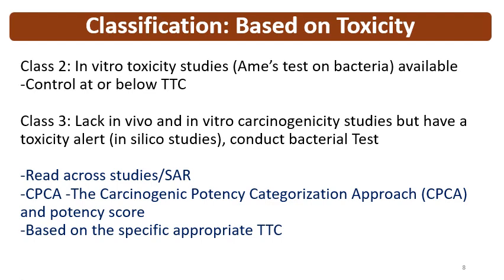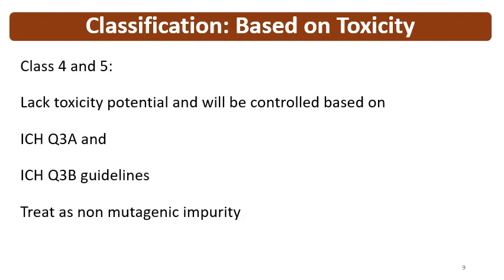The Carcinogenic Potency Categorization Approach (CPCA) is provided by regulatory authorities based on structure. Based on the presence of alpha carbon, beta carbon, and other structural characteristics, a CPCA potency score is assigned, and from that score the limits are derived. Additionally, based on a specific appropriate TTC, limits can be given for these impurities. Classes 4 and 5 lack toxicity potential — Class 4 has an alerting structure while Class 5 does not — and both are controlled based on ICH Q3A and Q3B as non-mutagenic impurities.